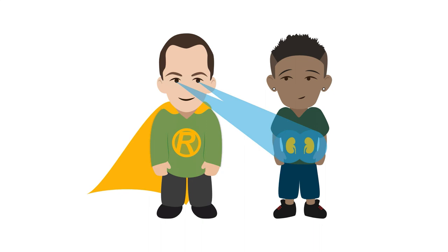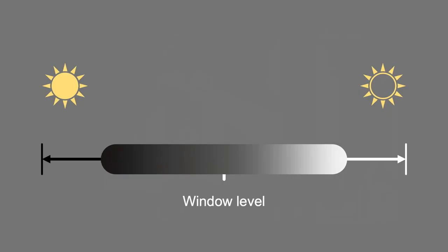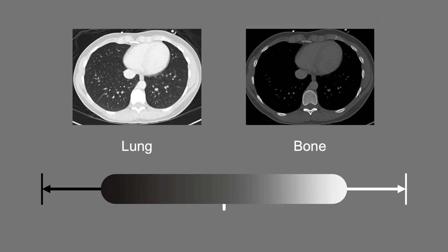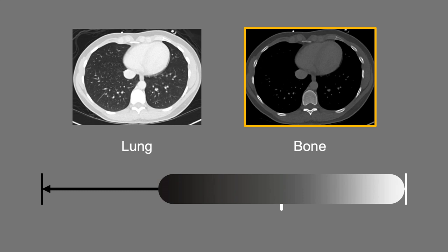Changing the window level or center point essentially makes the whole image brighter or darker. However, the biggest difference can be seen between the lung and bone windows. When viewing bones, the midpoint is higher because you want the center of your grayscale values to optimize your ability to evaluate denser bone. In this case, the level is about 300 Hounsfield units.